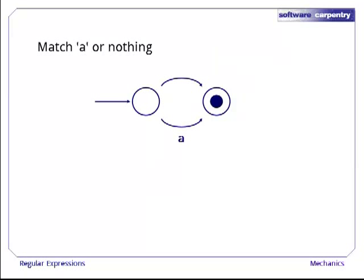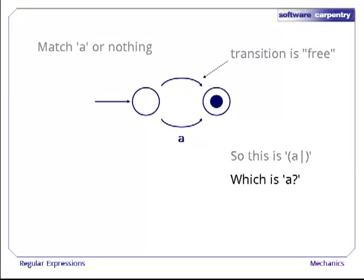Here's a finite state machine that matches against the letter a or nothing. The top arc isn't marked, so that transition is free. We can go from the first state to the second state without consuming any of our input. This is a or nothing, which is the same as a question mark, i.e. the optional character a.